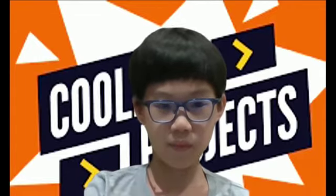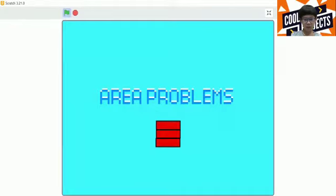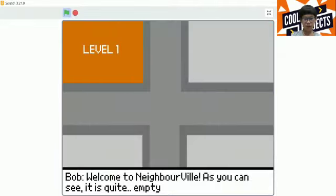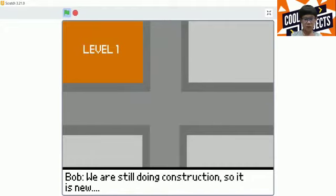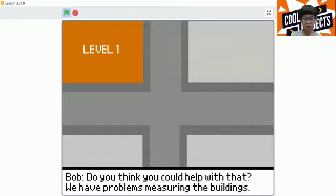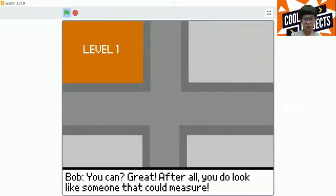It is called Area Problems. In this game you will help two builders called Bob and Livvy build a city. There are a total of four levels, and in each level you will have three attempts to answer correctly.